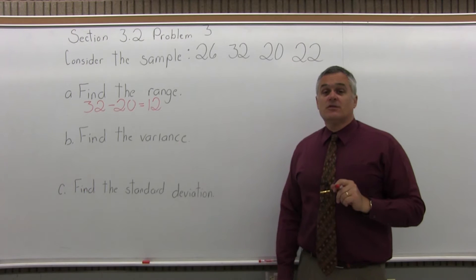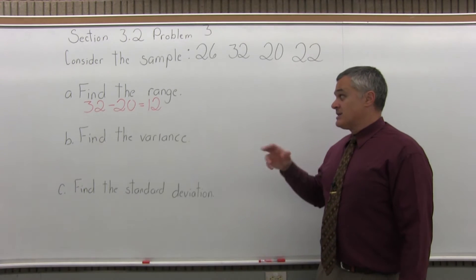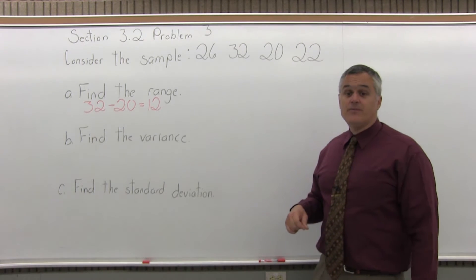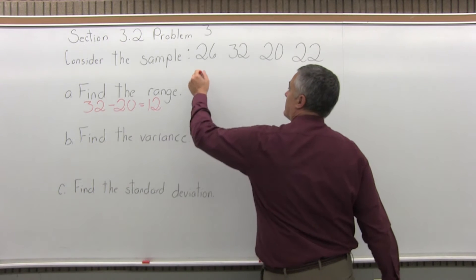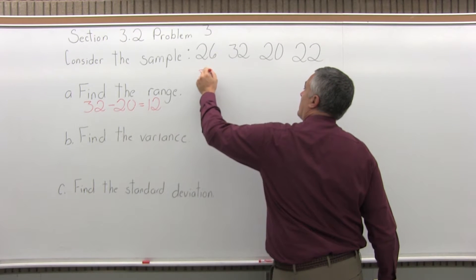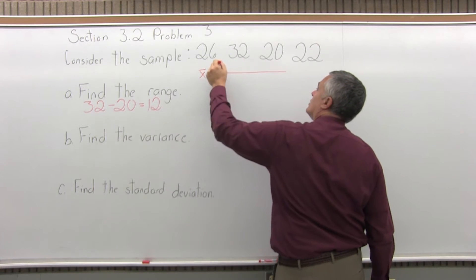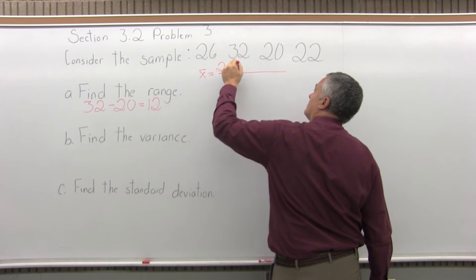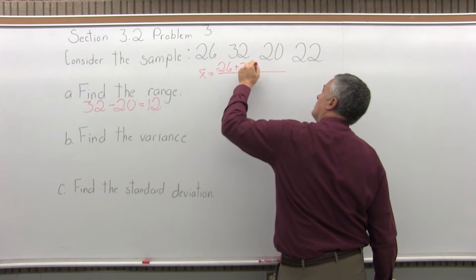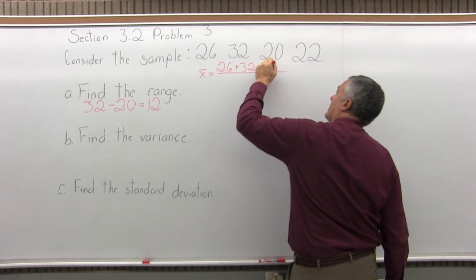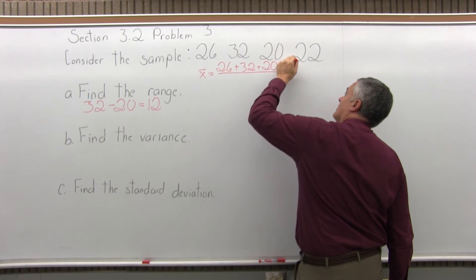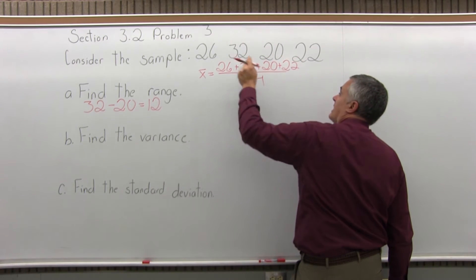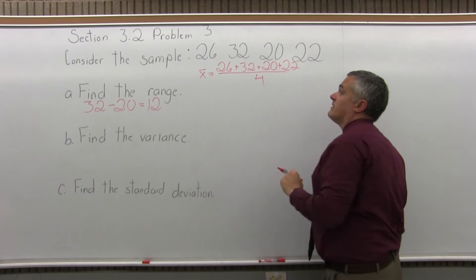So next, the variance. To find the variance, we use a four-step process. Step one is find the mean and label it X bar. So we'll have X bar equals 26 plus 32 plus 20 plus 22 divided by 4 because I have four data values.